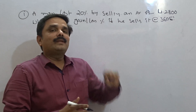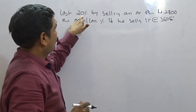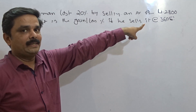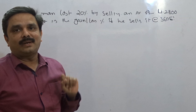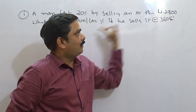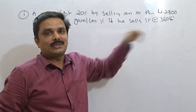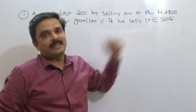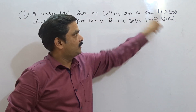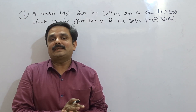What would be the conventional way of doing this question? First, using the loss percentage and the selling price, I can get the cost price. After getting the cost price, I compare it with the new selling price. If the selling price is more than the cost price, that is a profit transaction; otherwise, it is a loss transaction. This is the conventional way.